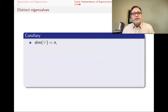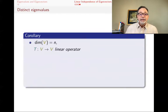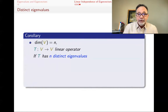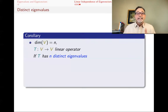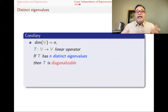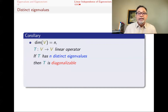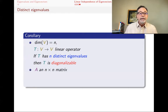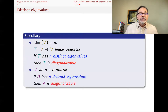Here is a quick corollary. If V is an n-dimensional vector space and T is a linear operator from V to V that has n distinct eigenvalues, then T is diagonalizable. Each eigenvalue has at least one eigenvector, and that collection of n eigenvectors is linearly independent by the theorem we just proved. Therefore we have n linearly independent eigenvectors, so T — and any matrix representing T — is diagonalizable.